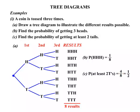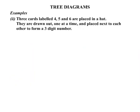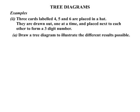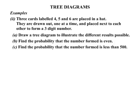Excellent. Our second example now. Three cards labelled four, five and six are placed in a hat. They are drawn out one at a time and placed next to each other to form a three-digit number. Now again we need to draw a tree diagram to illustrate the different results possible. Then we are going to find the probability that the number formed is even. And finally find the probability that the number formed is less than 500.